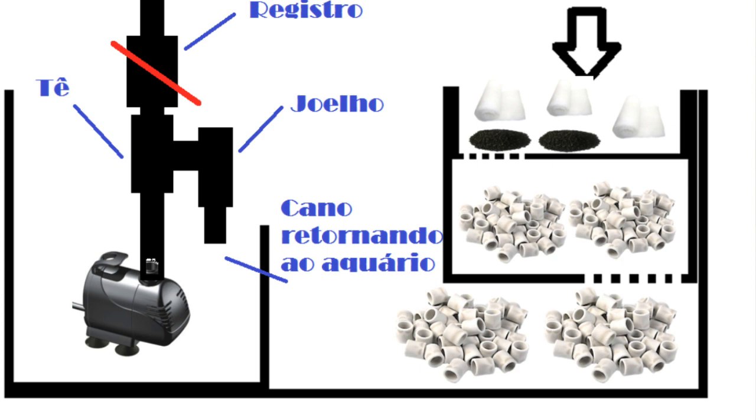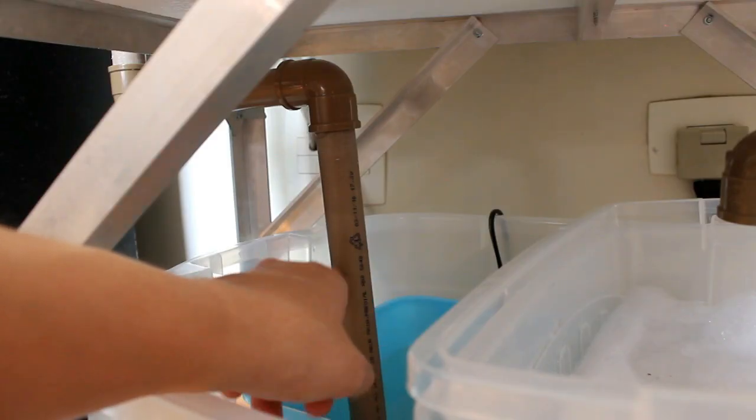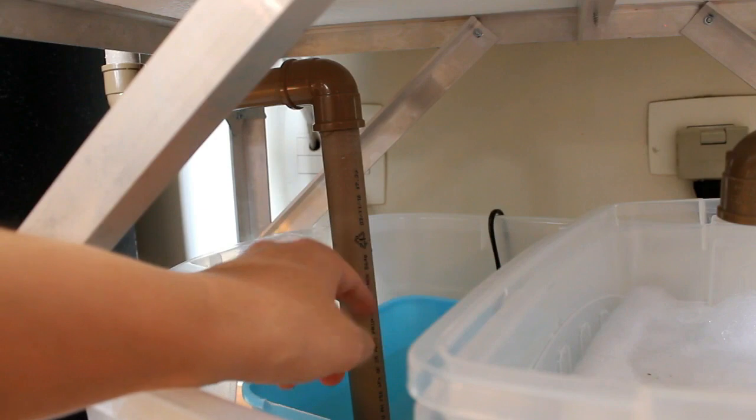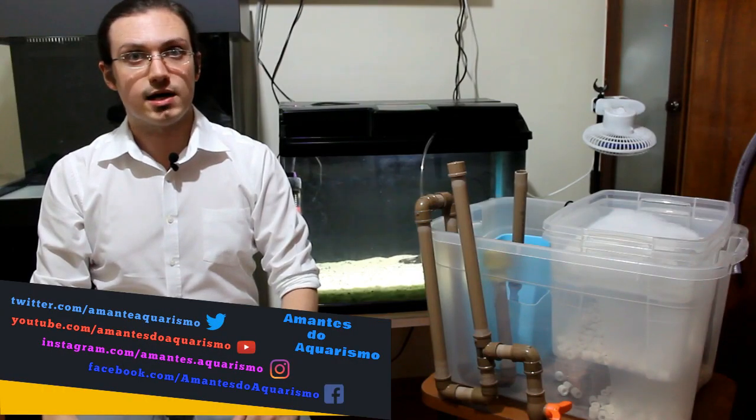Eu controlando o registro aqui, eu posso controlar o registro no overflow e controlar o registro na bomba de recalque. E eu não posso colocar só o registro, porque senão vai forçar a bomba. E por isso, eu tenho que colocar o tê embaixo do registro para a parte da água voltar para o Samp. Não vai dar tempo de eu fazer isso até finalizar o vídeo, mas é importantíssimo que vocês coloquem esse outro registro aqui, caso vocês comprem uma bomba muito forte.